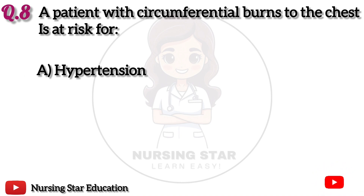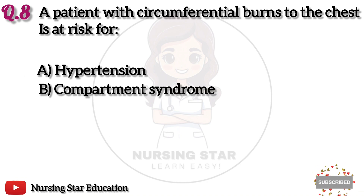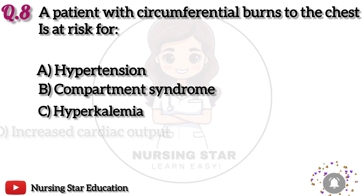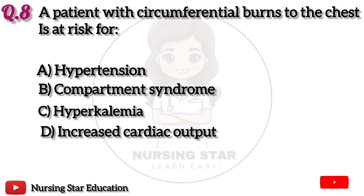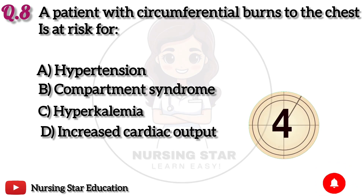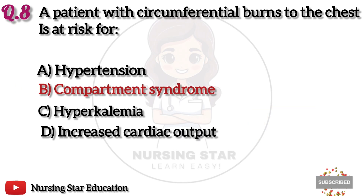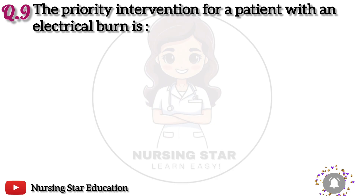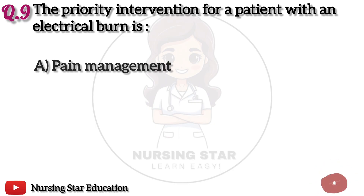Question 8: A patient with circumferential burns to the chest is at risk for. Option A: Hypertension. B: Compartment syndrome. C: Hyperkalemia. D: Increased cardiac output. The correct answer is B: Compartment syndrome.